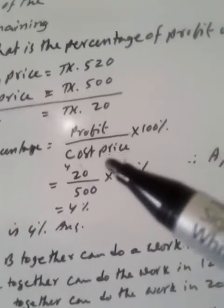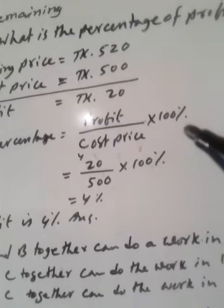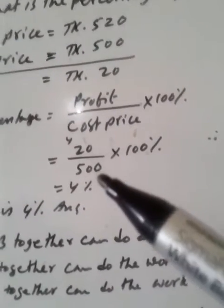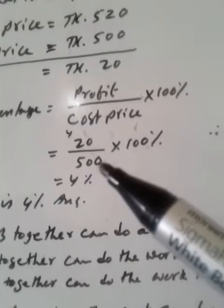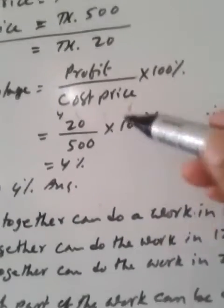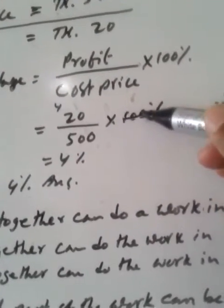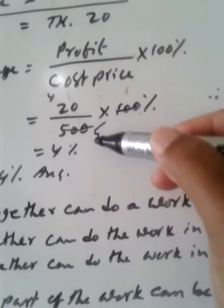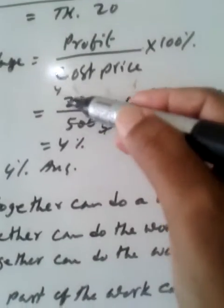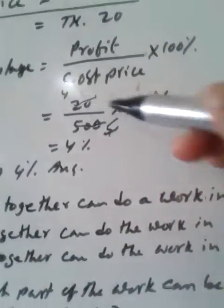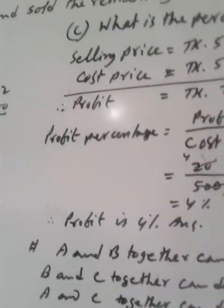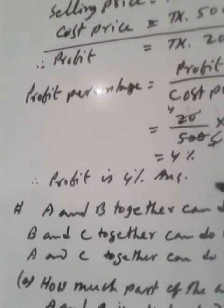For profit percentage: profit percentage equals profit divided by cost price multiplied by 100%. Profit is 20 Taka, cost price is 500 Taka multiplied by 100%. This 100 divided by 500, we are getting 5. And by 5, if we divide 20, we are getting 4. Then 4%, the profit is 4%.